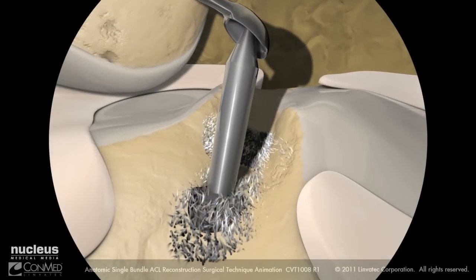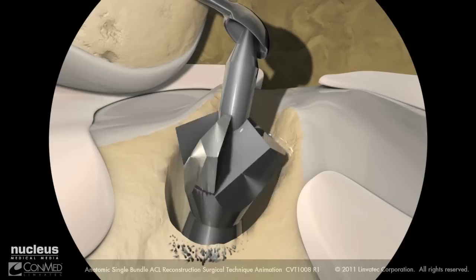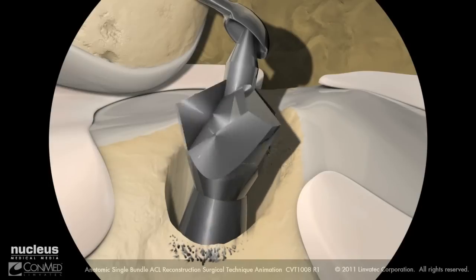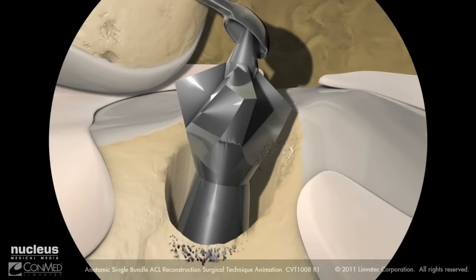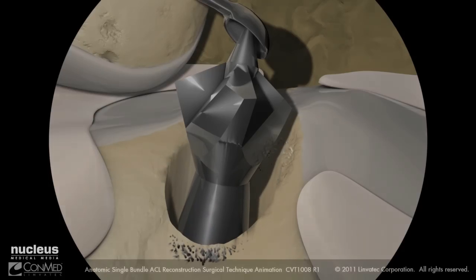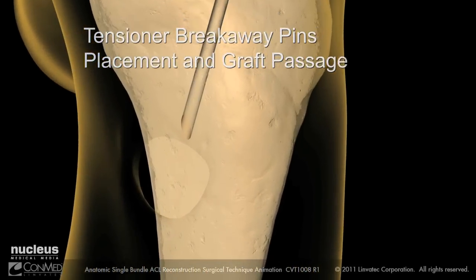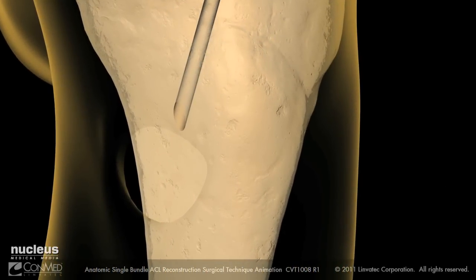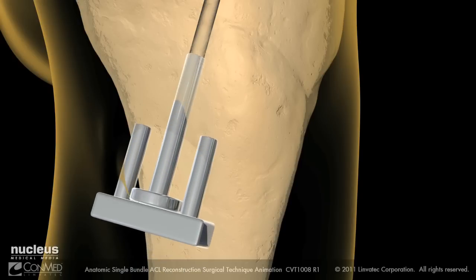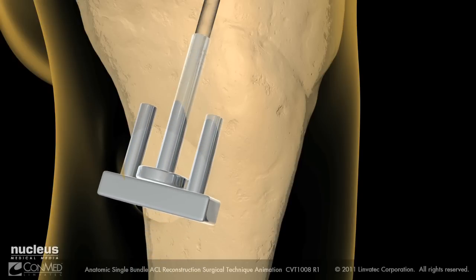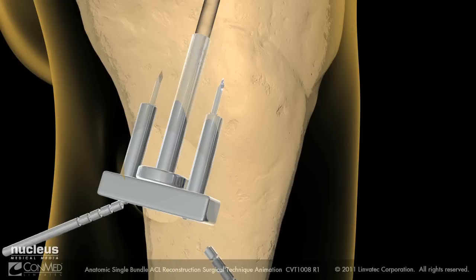Be sure to use the appropriate size badger or sentinel drill bit to drill the tibial tunnel. Using the appropriate size SE graft tensioner drill guide, place the guide in the tibial tunnel and position two breakaway pins, then remove the guide.